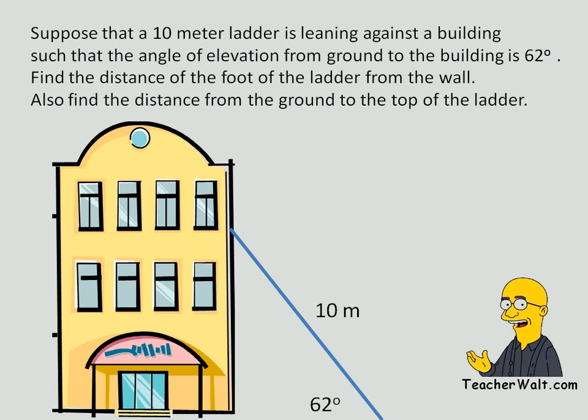Now once you label your knowns, once you take care of what you're given, you assign variables to the unknowns, what you're looking for. So I'm going to assign x and y, y being the distance from the ground to the ladder and x being the distance from the building to the ladder.